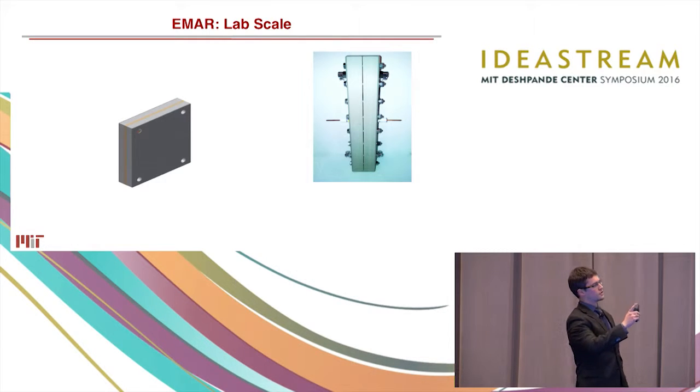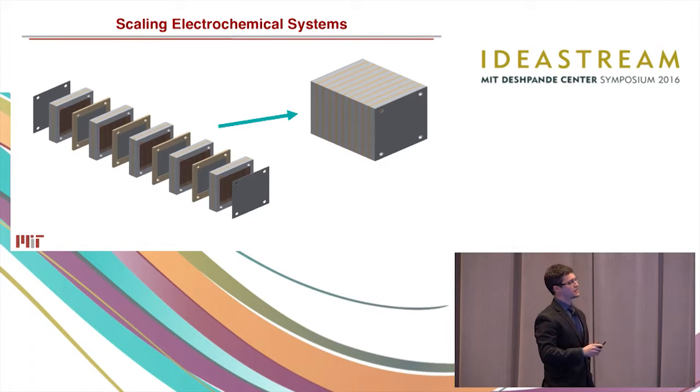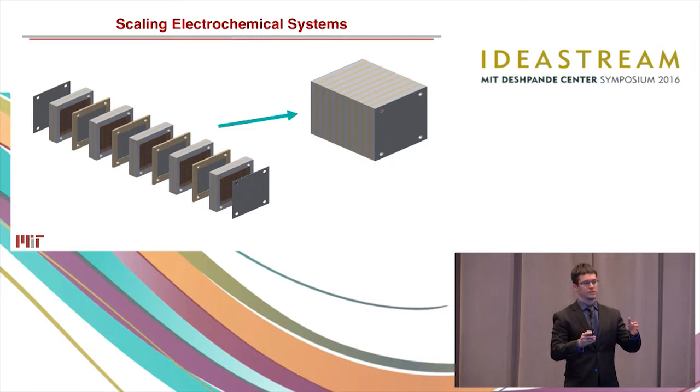Before everything gets buttoned up, you can see on the sides where we provide that positive and negative voltage to get the CO2 released. And we've demonstrated in the lab that by applying current we can selectively capture carbon dioxide. So one of the really nice things about a system like this is how it scales. Electrochemical systems get to scale in parallel. If I want to capture more CO2, I simply stack together more EMAR cells.